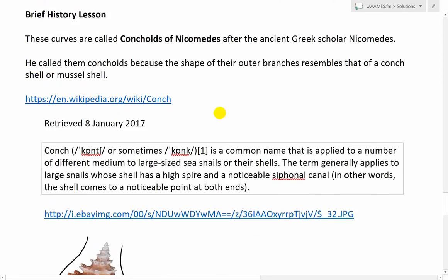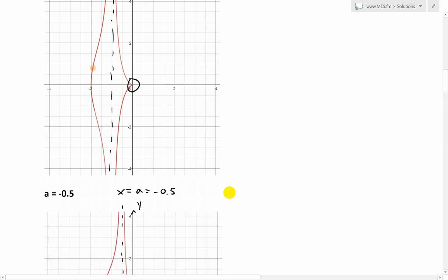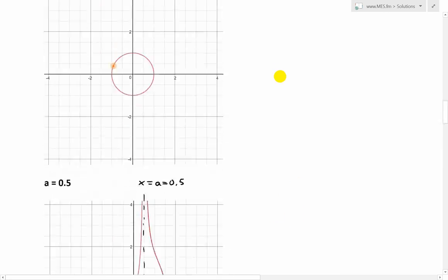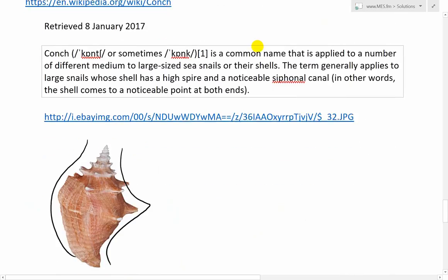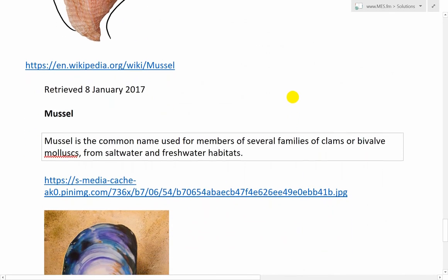A conch shell looks like this. Conch is just a common name that is applied to a number of different medium to large size sea snails or their shells. The term generally applies to large snails whose shell has a high spire and a noticeable siphonal canal. In other words, the shell comes to a noticeable point at both ends. So it looks something like this. This is somewhat like our shape where this is going like this and this has a cusp like that.